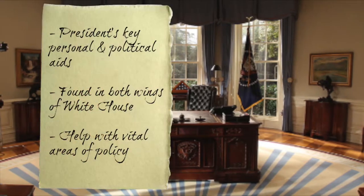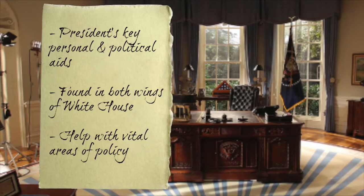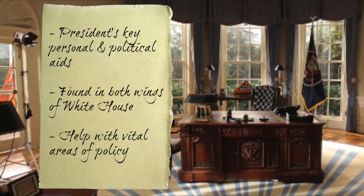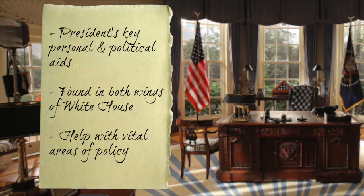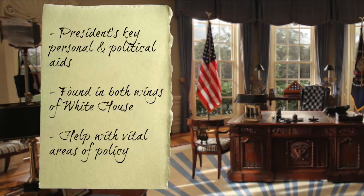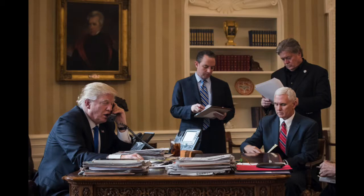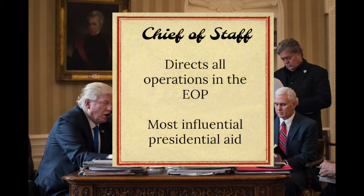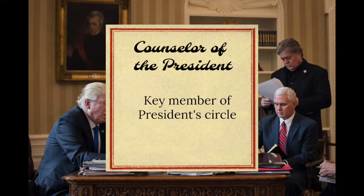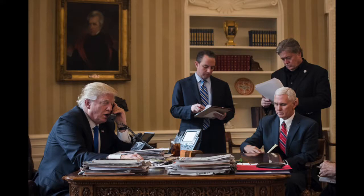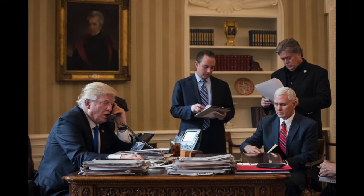The EOP's nerve center is an agency called the White House. Most of the president's key personal and political aides work there. The two wings on either side of the White House hold the offices of most of the president's staff. Presidential assistants occupy much of the crowded west wing, which the public seldom sees, and where the legendary Oval Office and the Cabinet Room are located. Key aides include the White House chief of staff, the counselor to the president, senior advisors, the press secretary, the appointments and scheduling assistant, and the president's physician.